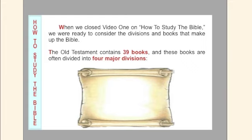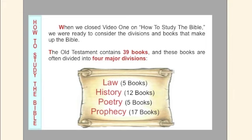The Old Testament contains 39 books, and these books are often divided into four major divisions: Law, five books; History, twelve books; Poetry, five books; and Prophecy, seventeen books.